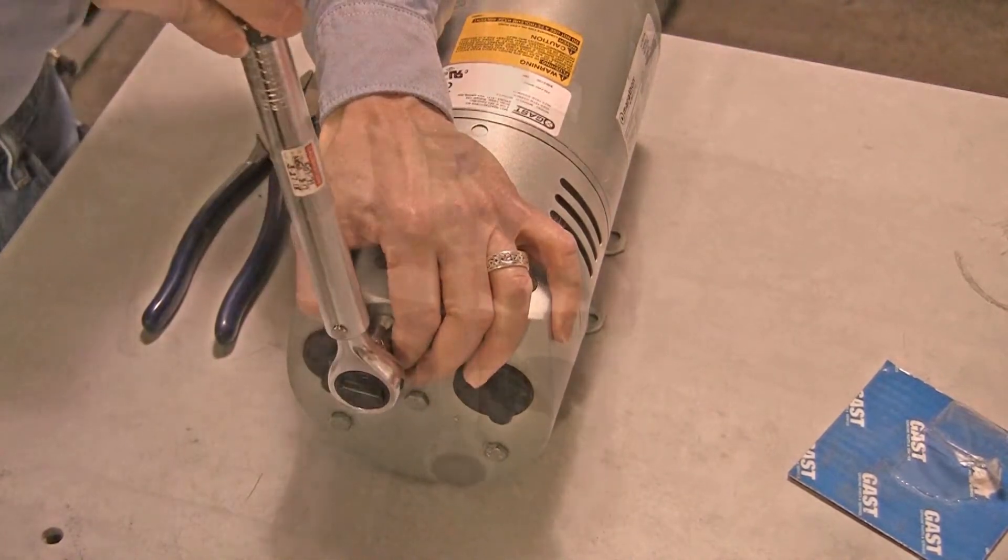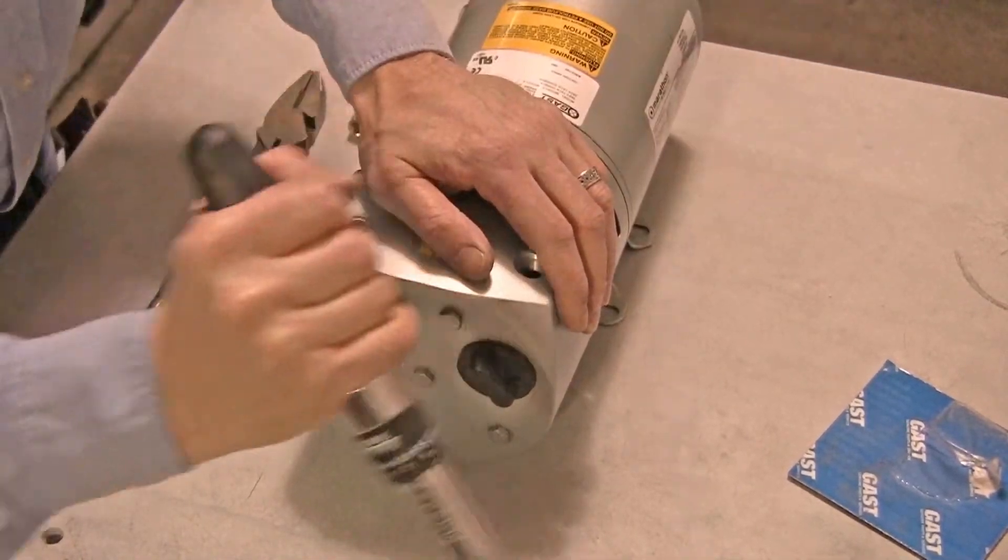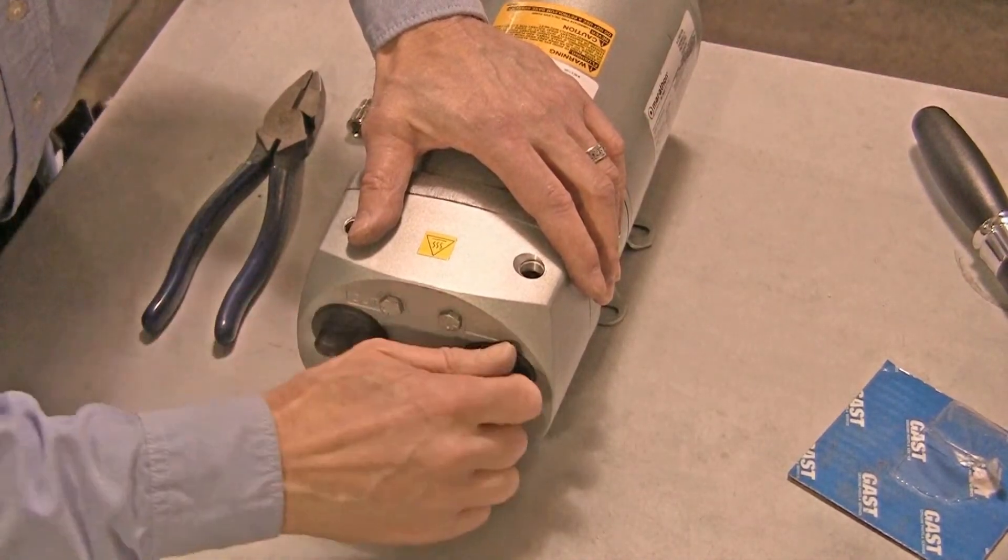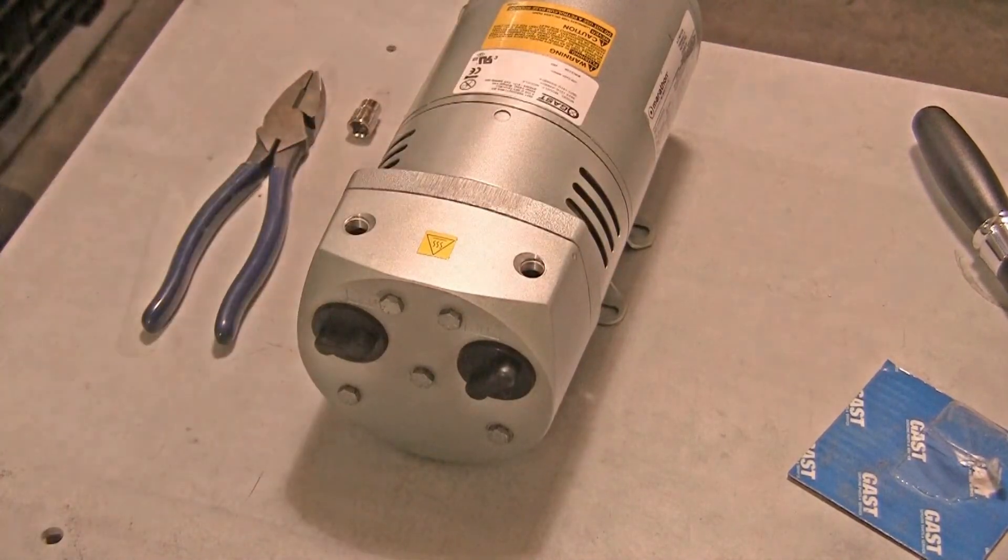Tighten the muffler box bolts to 110 inch pounds, and re-tighten the filter screws if necessary. Your vacuum pump is now ready to return to service.